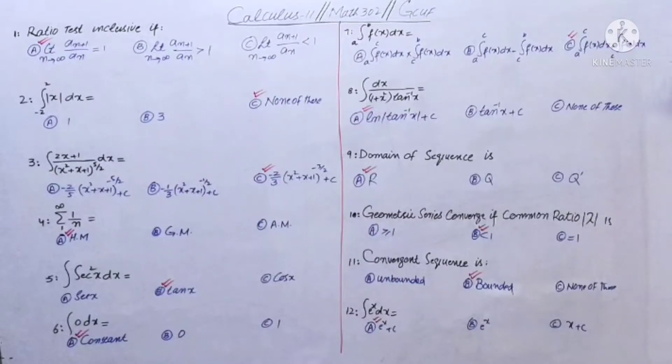We will split the integral from minus 2 to 0 and 0 to 2. Then we have upper limit minus lower limit, so the answer will be none of these. None of these is the right answer.